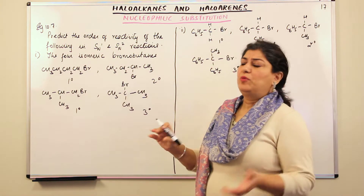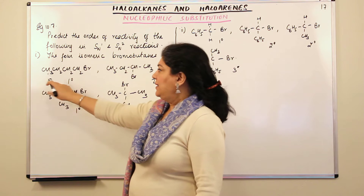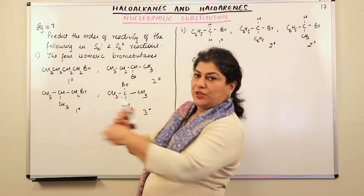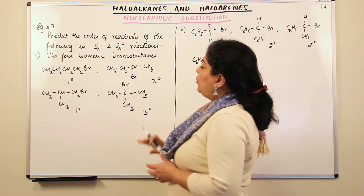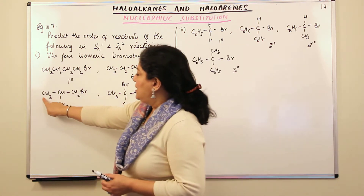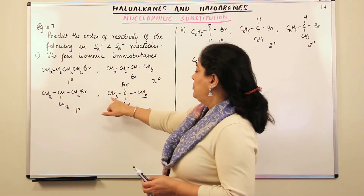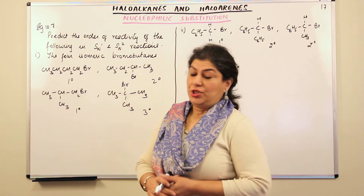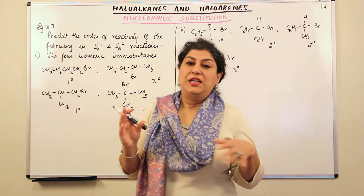The four isomeric bromobutanes — I have already made the structures. The first is a straight chain: CH₃CH₂CH₂CH₂Br. The second shifts bromine to the second carbon: CH₃CH₂CHBrCH₃. In the third, instead of moving bromine, we make a methyl group a branch: CH₃CH(CH₃)CH₂Br. The fourth isomer has two branches: CH₃C(CH₃)(CH₃)CH₂Br — so there are two branches. These are all the isomeric bromobutanes you can prepare.